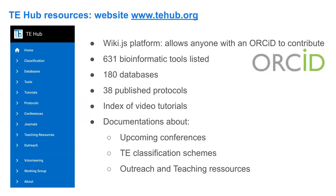The TE-Hub website is tehub.org and runs on a wiki platform. To register and contribute, you just need an ORCID — a small layer to prevent random edits. As of making this presentation, we have 631 bioinformatic tools listed, 180 databases, 38 published protocols, an index of video tutorials, documentation about upcoming conferences, at least four or five classification schemes, and outreach and teaching resources. I highly recommend just navigating around to see what's there.